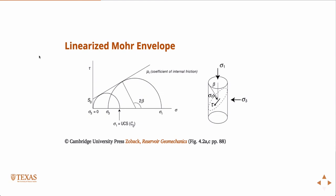Where this straight line crosses the y-intercept, or the shear axis, we call that the cohesion. So this S0 is called cohesion.